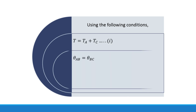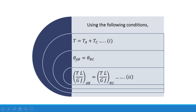Since the shaft is fixed at both ends, we apply two conditions. First, total torque T equals torque at A plus torque at C. Second, the angle of twist in portion AB must equal the angle of twist in portion BC. The angle of twist formula is θ = TL / (JG), giving us the two governing equations for the compound shaft.